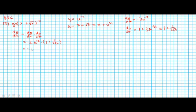Then we do a substitution, which gives us negative 2 times (x plus square root of x) to the negative 3 power, all multiplied by 1 plus 1 over 2 root x.